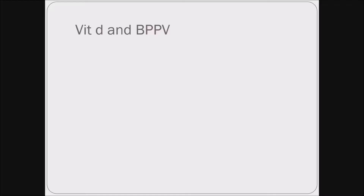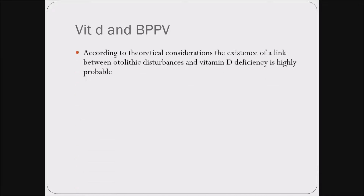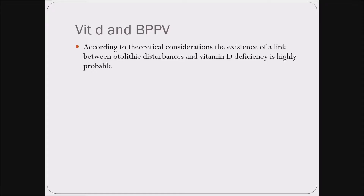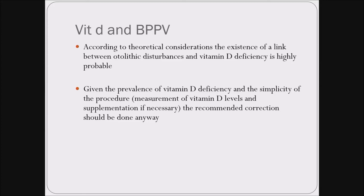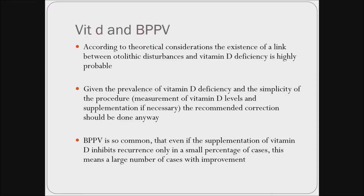Next, vitamin D and BPPV. We all know BPPV is due to dislodgement of calcium carbonate crystals — and there is calcium, the electrolyte. Vitamin D is required for the absorption of calcium. Some people say that vitamin D is useful in refractory or recurrent BPPV. A study gave these postulates: first, theoretically there exists a link between BPPV and vitamin D. Given the prevalence of vitamin D deficiency and the ease of giving it, give it anyway. Second, since BPPV is so common, even if it helps a small percentage of people, technically it will be helping a large number of people. So whether it helps or not, give vitamin D — that is what the study says.